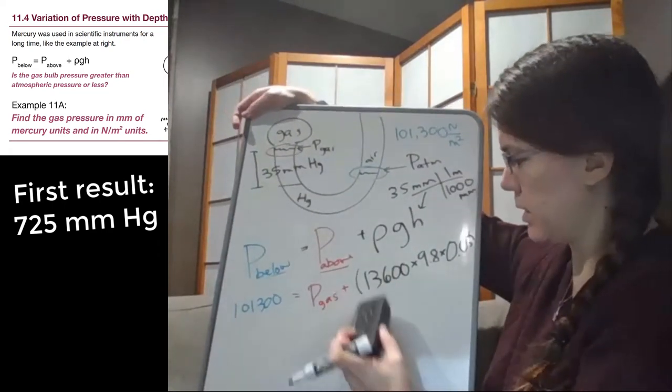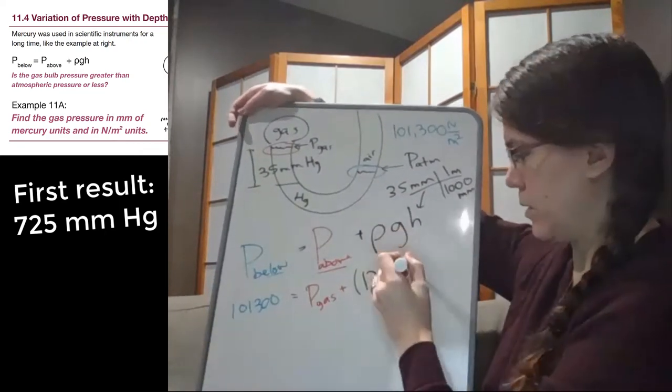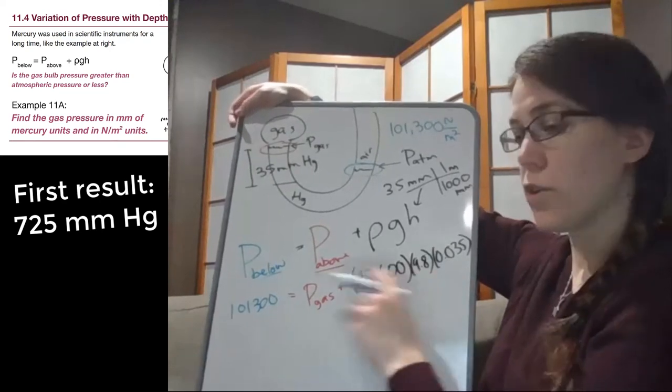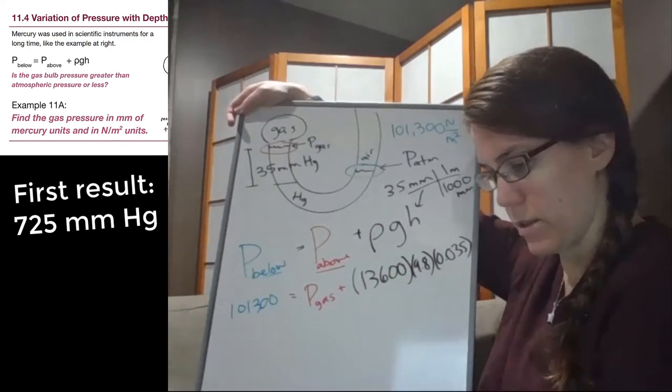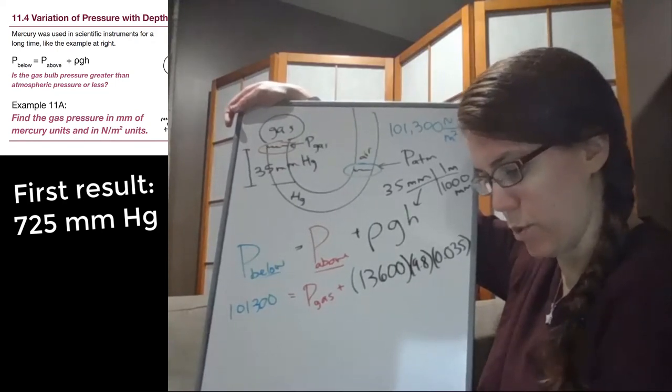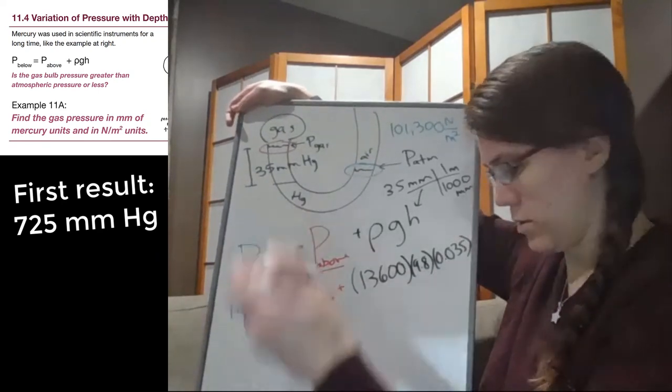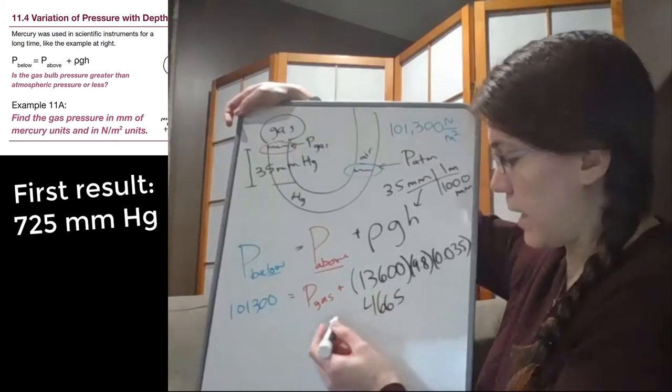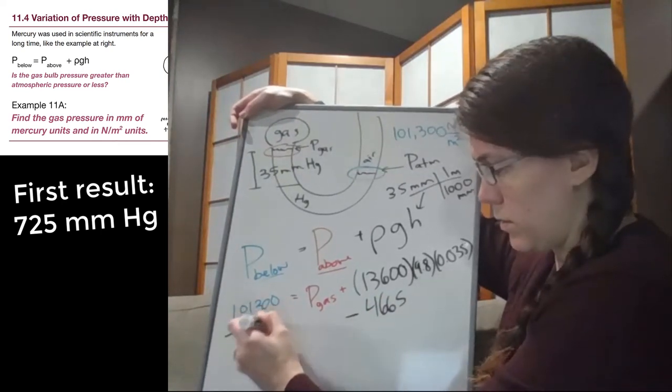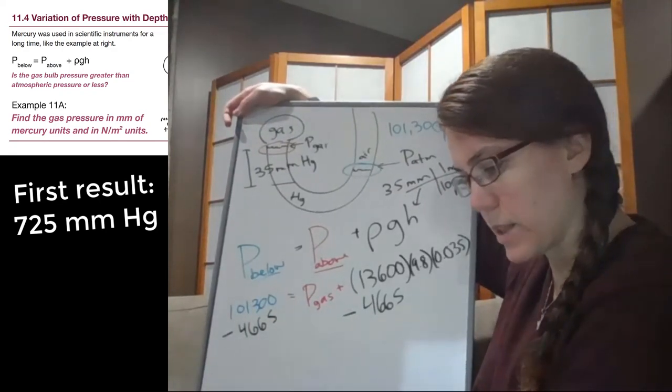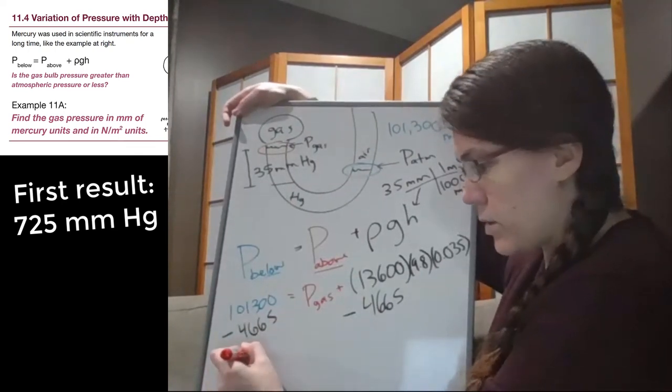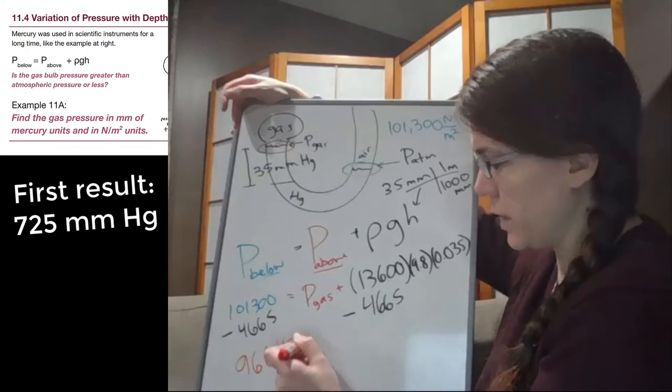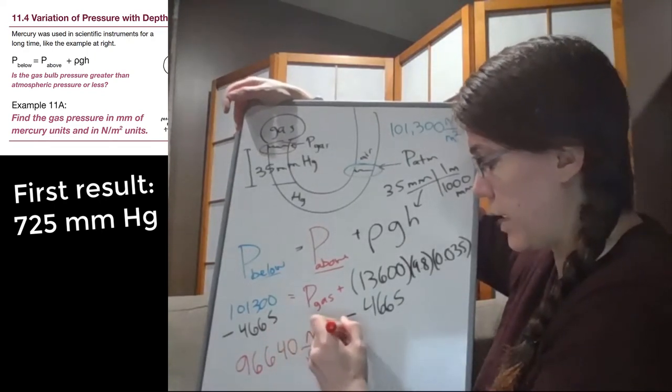That's way too small on the side. Let's try this one again. So 0.035, okay? So if we multiply all of those together, so 13,600 times 9.8 times 0.035, we get 4,665. So I'm going to subtract that from both sides. So what we get here on the left, 101,300 minus that value, is 96,635. So I'm going to round that to 640. That's in newtons per meter squared. And that is our gas pressure.